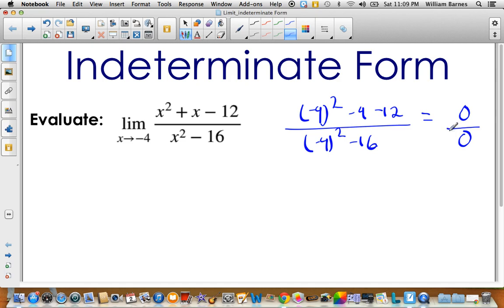So the reason why we call it indeterminate form is we simply cannot tell the limit just by subbing in. So we have to do something before we do that. Now sometimes it's obvious, sometimes it's not.